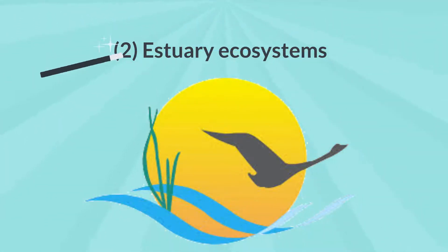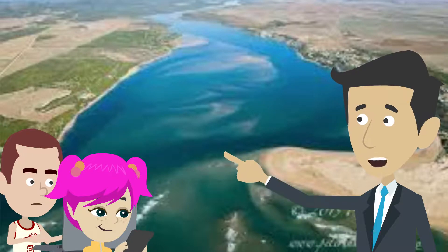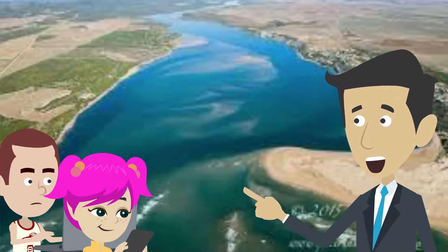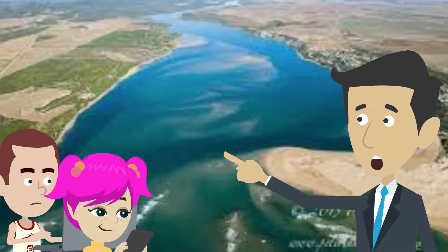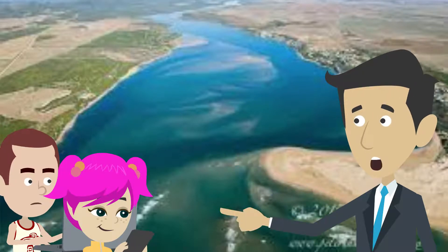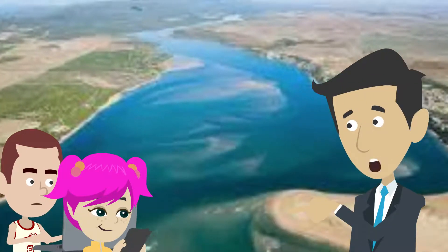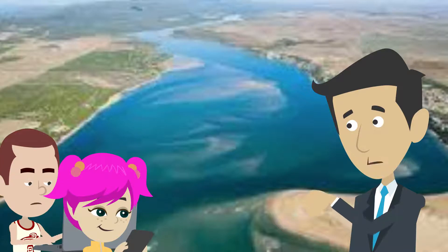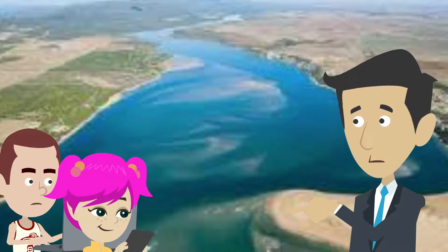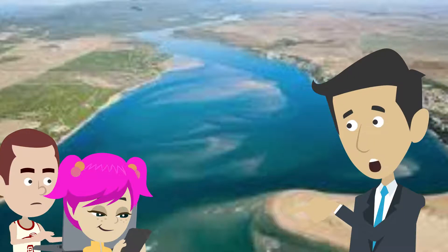Estuary Ecosystems. The estuary is where the river merges into the sea. It can be defined as the area where salt water is diluted with fresh water. Coastal bays, tidal swamps, and water bodies behind barrier beaches are some examples of estuaries.